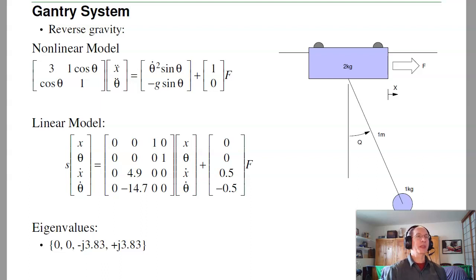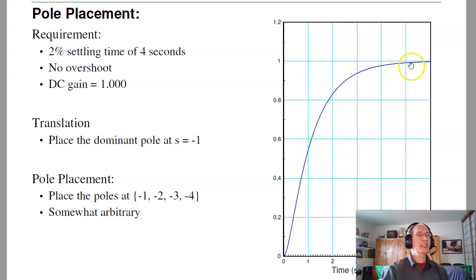So that was the cart pendulum system. Suppose I flip gravity around and come up with the gantry system. In that case, the gantry system will be just like the cart pendulum system, just change the sign of gravity. That's the only term that changes. That changes the sign of these two numbers. And more significantly, that changes the eigenvalues from being plus and minus 3.83 to plus or minus j 3.83. So this is an oscillatory system. Using pole placement, I want to get this response. No overshoot. DC gain of 1. 4 seconds settling time. Then again, that tells you the dominant pole goes to minus 1.